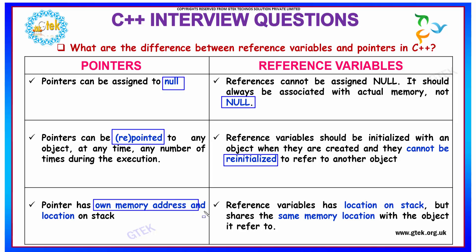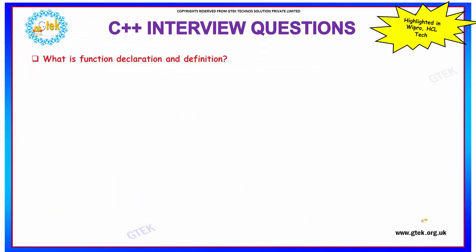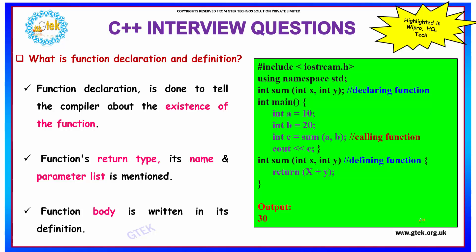Pointers have their own memory address and location, whereas your reference variable refers to the same location for both places. So this makes the major difference between your reference and the pointers.